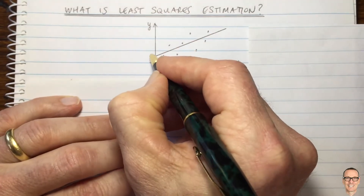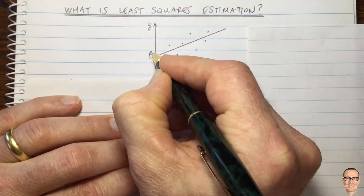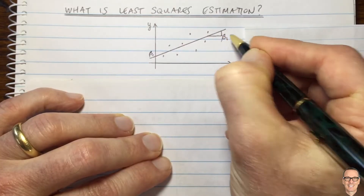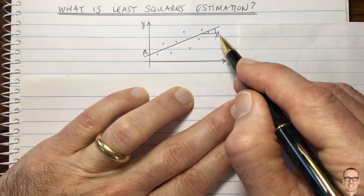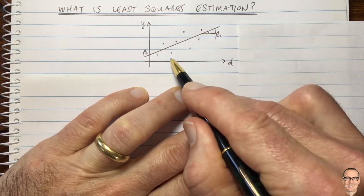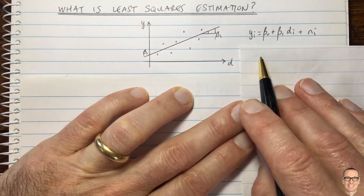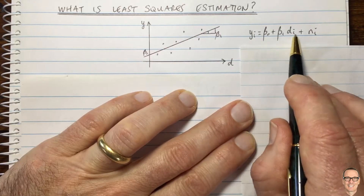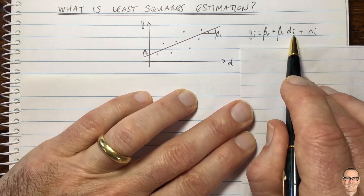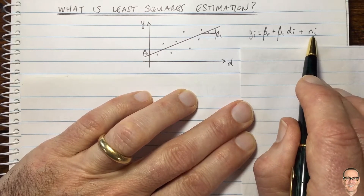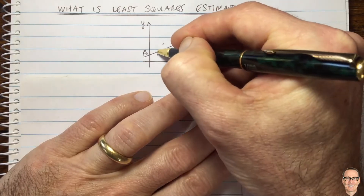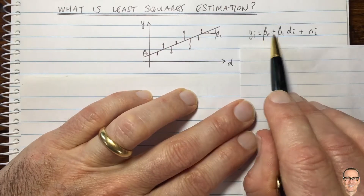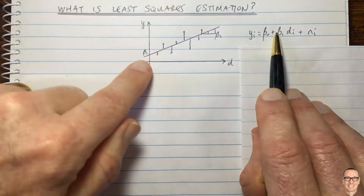We'd like to find an equation for that straight line. We can write down an equation in terms of the y-intercept and the gradient — let's call the y-intercept b0 and the gradient b1. For the i-th data point we have: y_i equals the equation for the line, which is b0 plus b1 times d_i, plus a disturbance term n_i, which represents the distances away from the straight line.